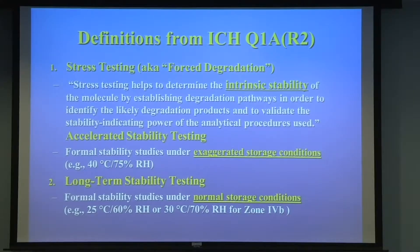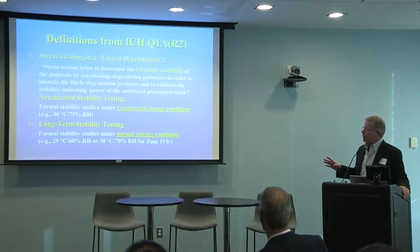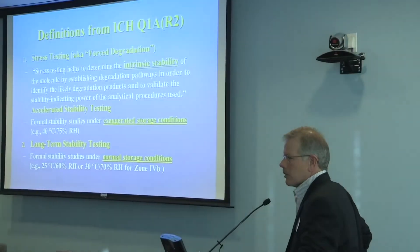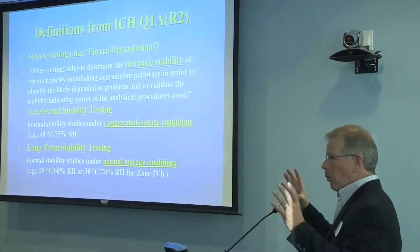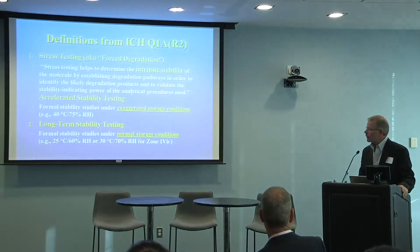Let's talk about some definitions from ICH Q1A — now it's an R2, second revision — and they define stress testing. I like this term: intrinsic stability of the molecule. Stress testing is designed to uncover the intrinsic stability and to establish the degradation pathways. When we do stress testing, the idea is to help you begin to understand the degradation chemistry of your compound — what are the available pathways that can be triggered under pharmaceutically relevant conditions.